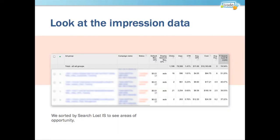We dug a little deeper into this idea and pulled some impression data. We sorted by search loss to see areas of opportunity. If you look at the far right column — this is at an ad group level — it shows search Impression Share lost due to rank. They don't show you loss due to budget at the ad group level. When comparing search Impression Share to rank, ranking higher means your search Impression Share will be greater.